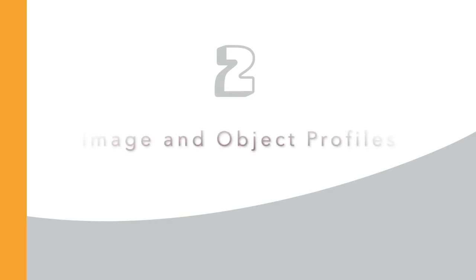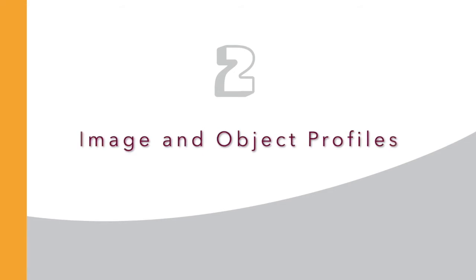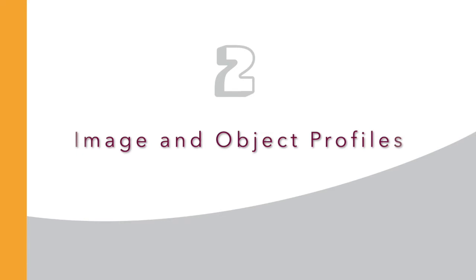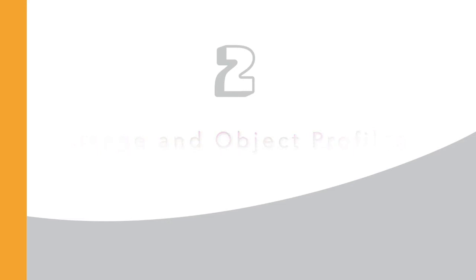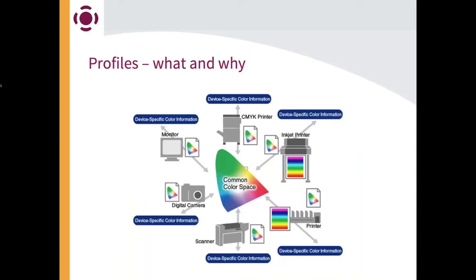Let's talk about image and object profiles. Before, Steve showed you the relationship in the diagram between the different color spaces. Profiles are really how we identify them, and these are critical. Understanding how this works is important background information as you try to make sure you can meet the expectations of what you're putting out versus what you're getting. So what are profiles? What do they mean? Why do we have them?